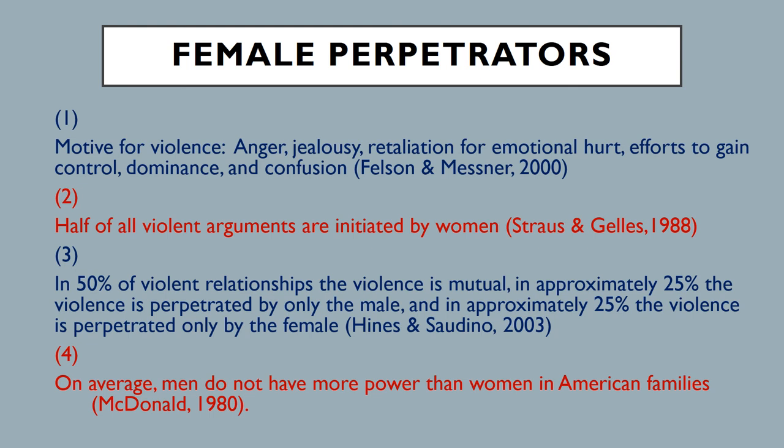Let's look at what are some of the major characteristics of female perpetrators. First, the motive for violence: research has shown that anger, jealousy, retaliation for emotional hurt, and efforts to gain control or dominance are the types of motives for violence. That doesn't sound much different than it might be for a male perpetrator acting against a female victim. Research has also shown that half of all violent arguments are initiated by women — it's a pretty balanced field, replicating findings going back to Strauss and Gels in 1988.